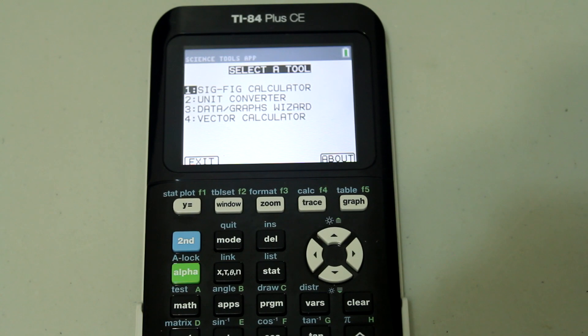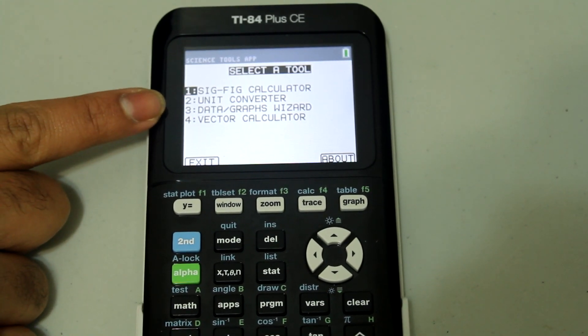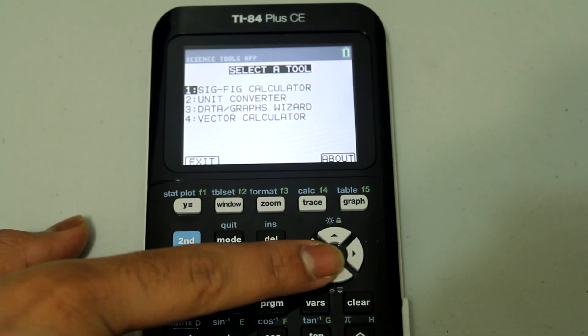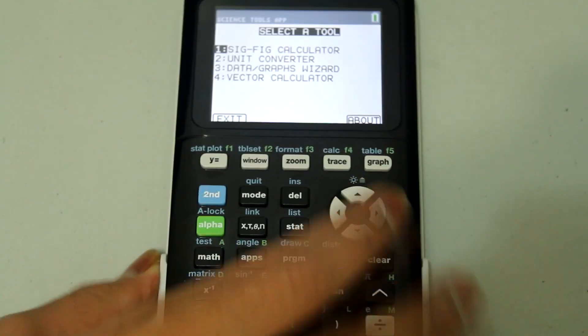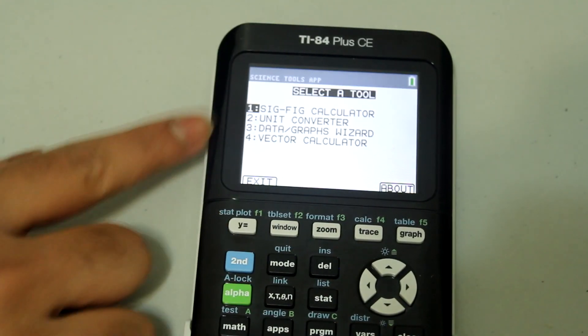And now we were told to select a tool and the one we're interested in is the unit converter. You can either scroll down and press enter or you could just press the number 2 button which is the number next to the feature.